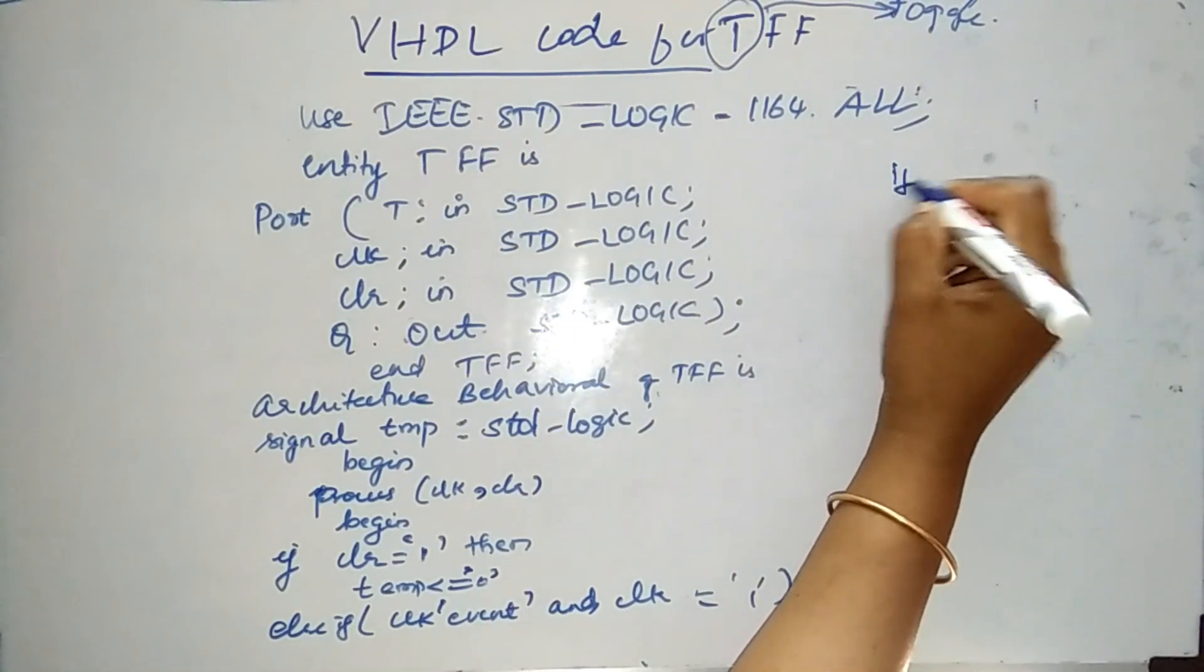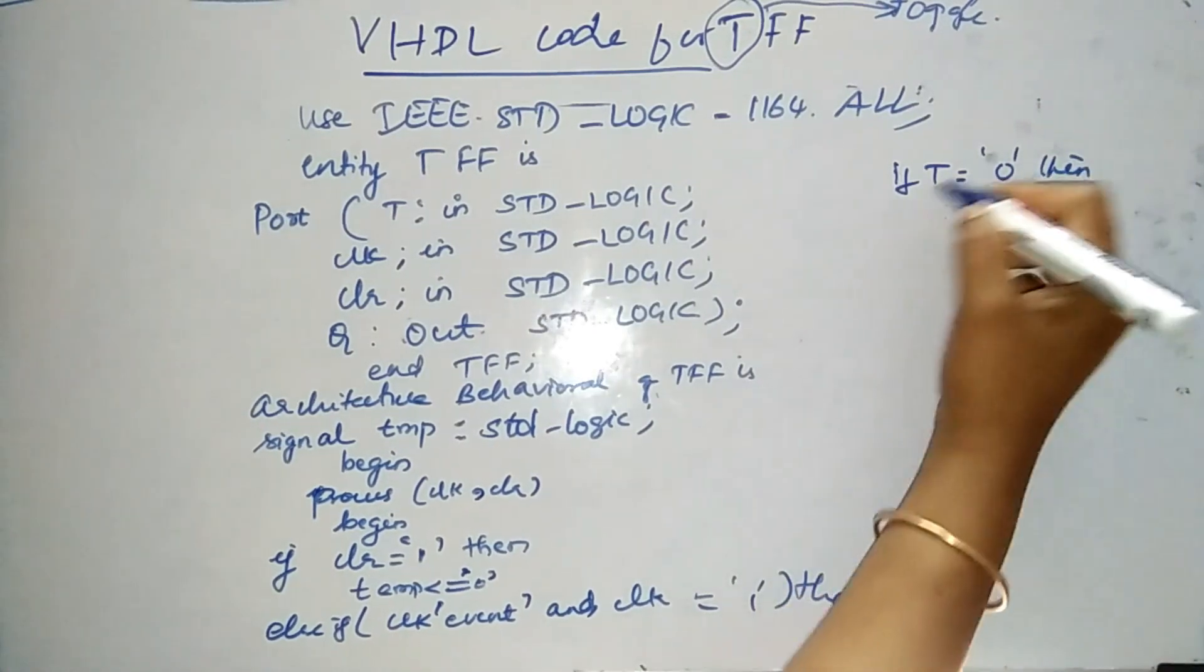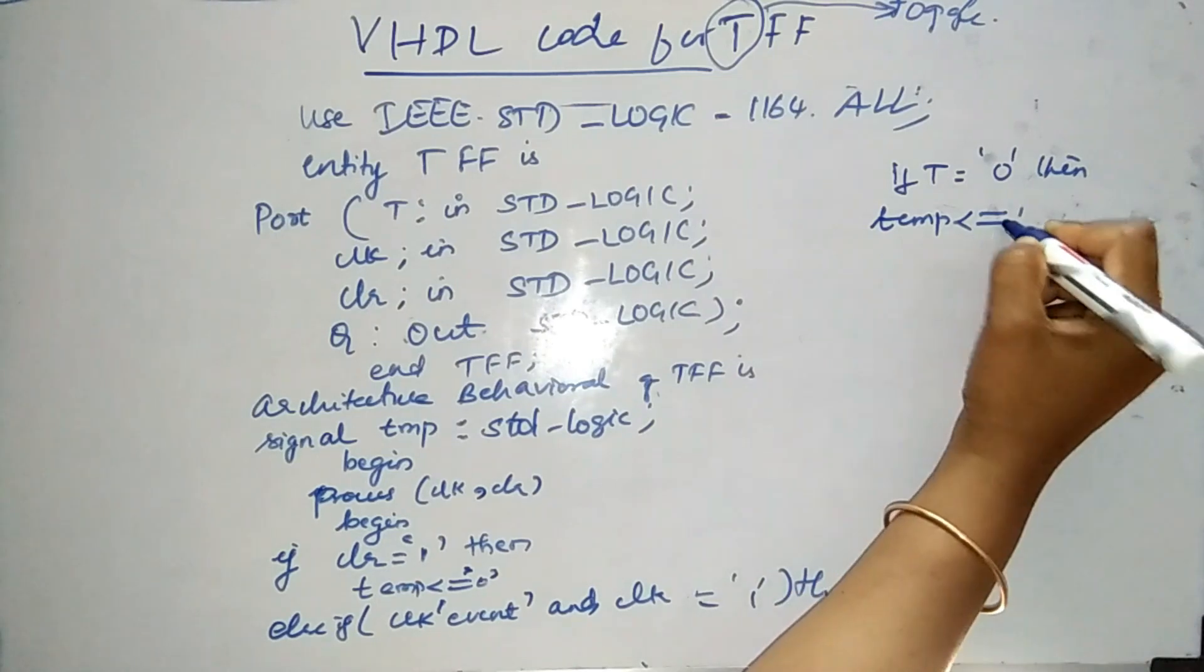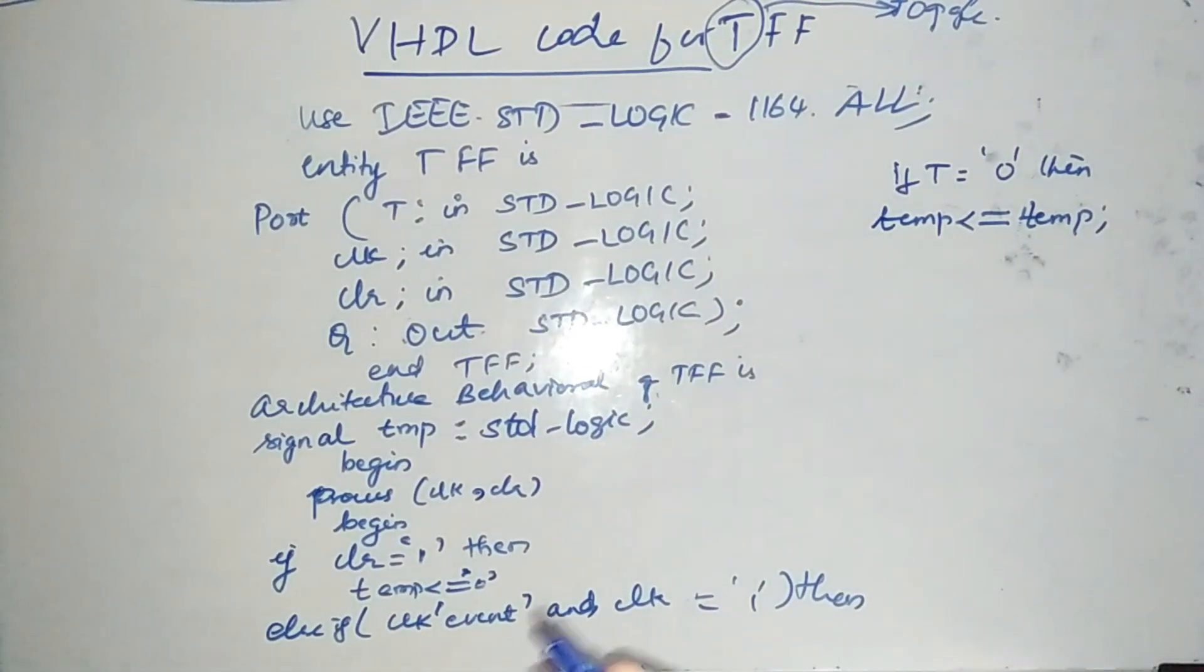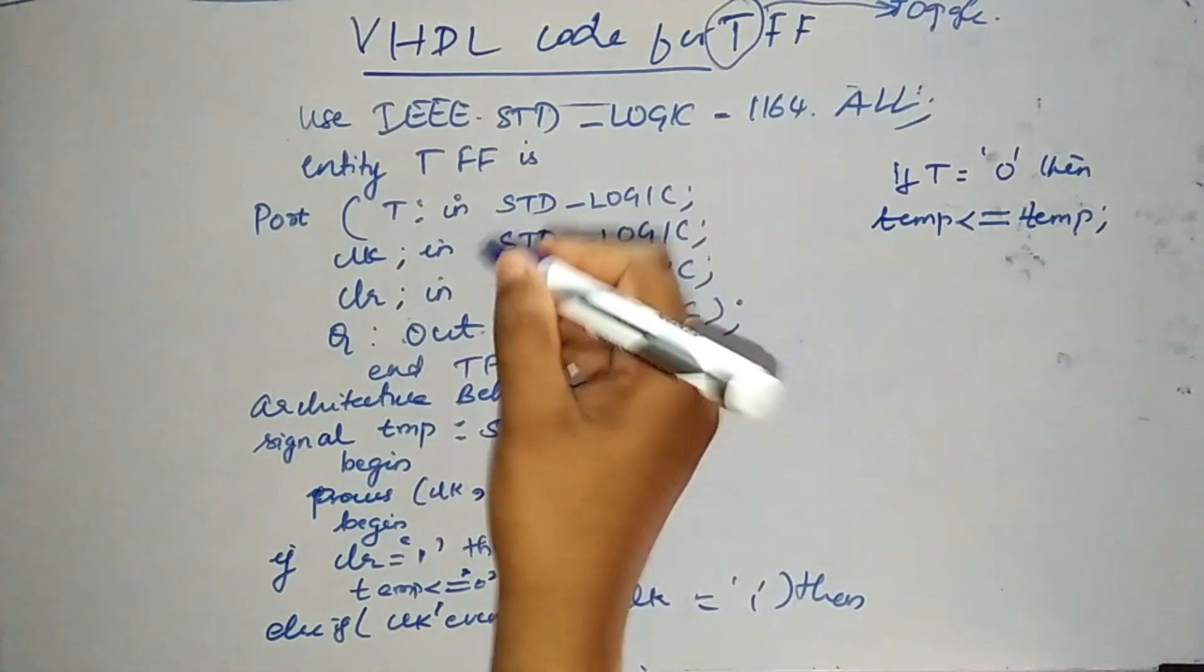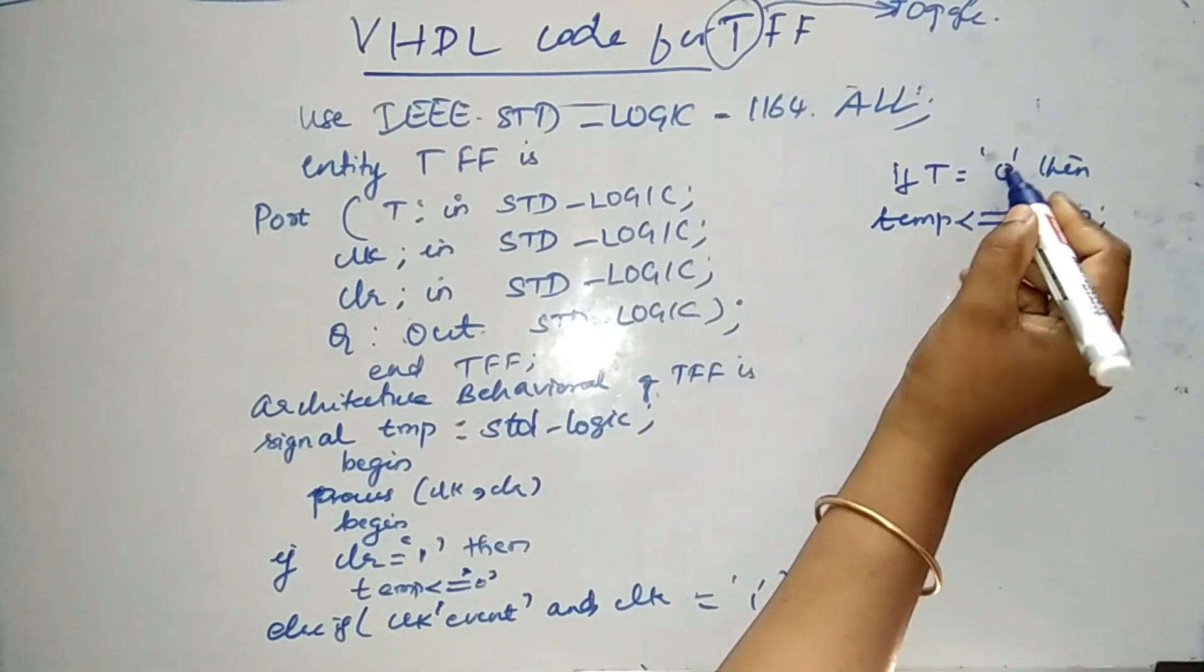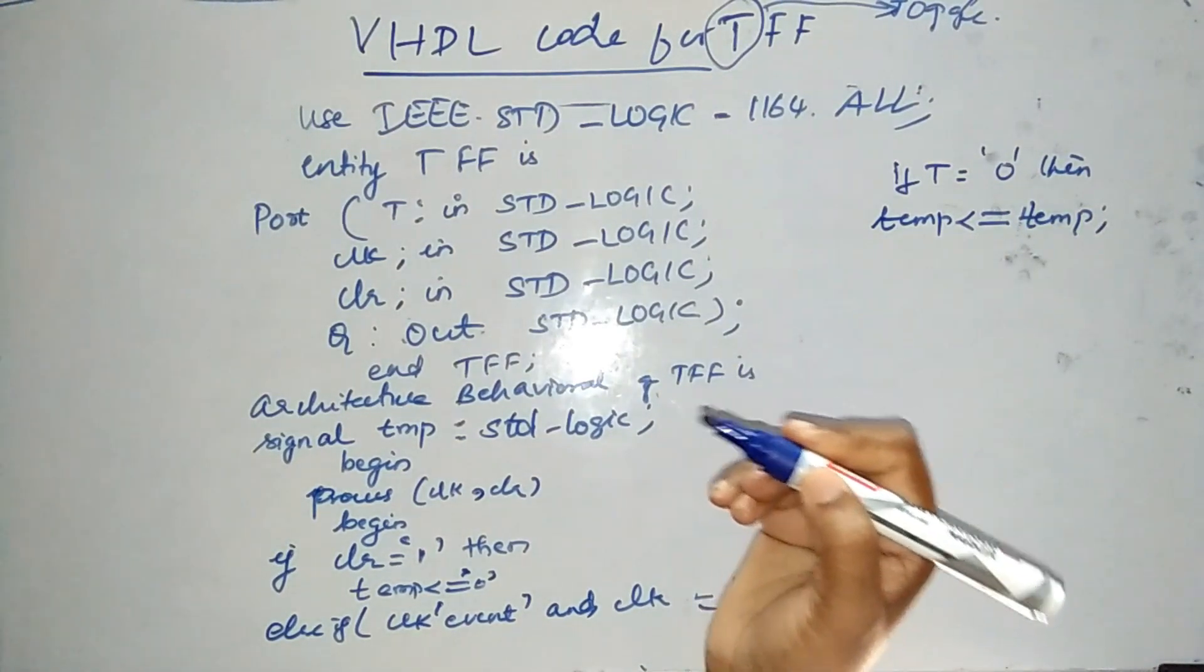So what happens? If T is equal to 0, then we know that temp tends to be equal to temp itself. We saw that in the truth table, whenever we have T is equal to 0, we get the same output. And when T is equal to 1, we get the complement of whatever is our input. So for the condition T is equal to 0, we have temp is equal to temp signal.